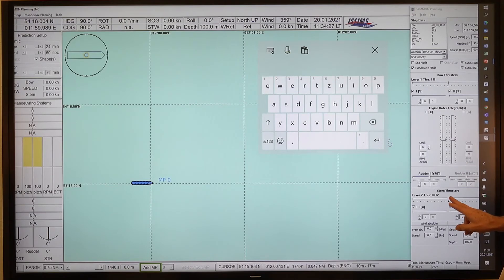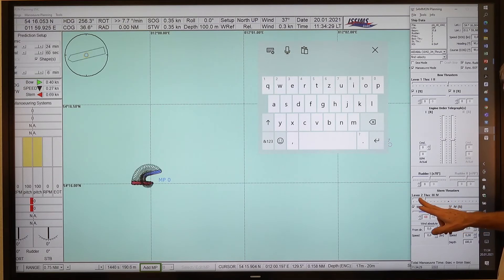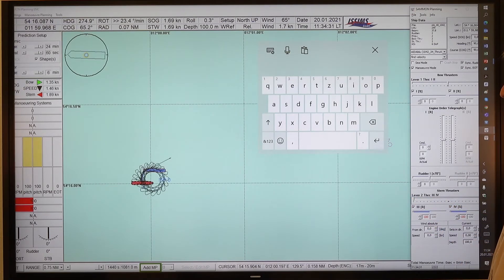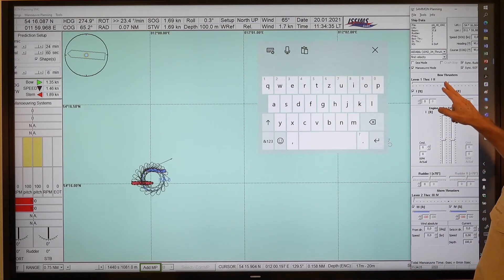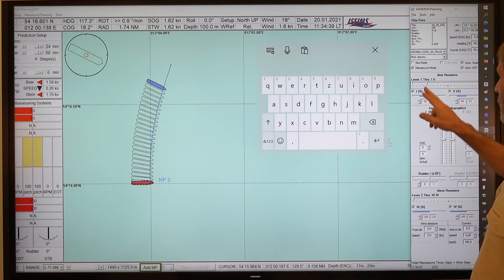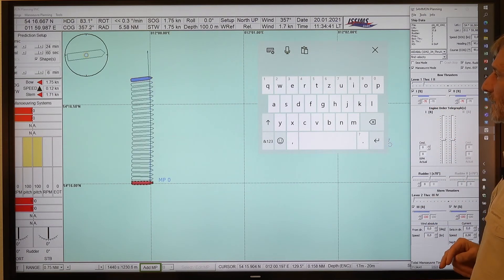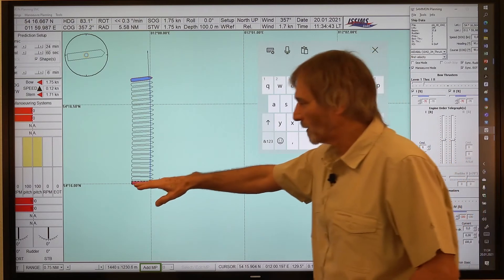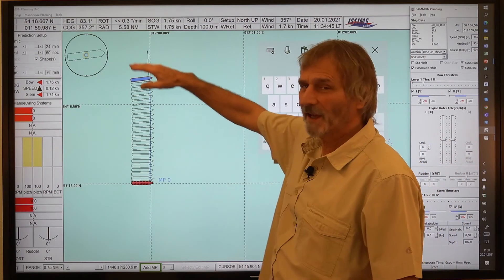So if I, for instance, use the stern thruster full to port side, this would be resulting in a turning circle. But if we use our bow thruster to 60% to 70%, this would mean our ship is crabbing sideways.